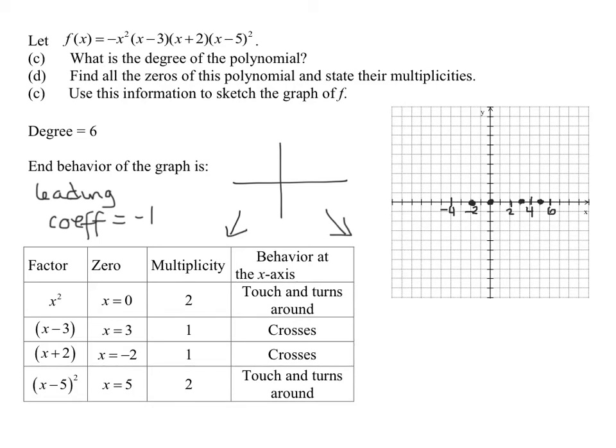And I use the end behavior, I know my graph has to start over here, down here, and it goes up to negative 2. And what happens at negative 2? It crosses the x-axis. So my graph starts at the bottom left, comes up through negative 2, and crosses.